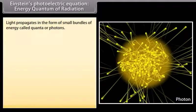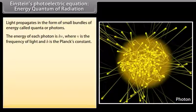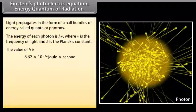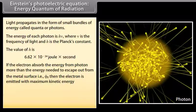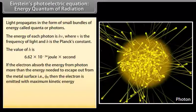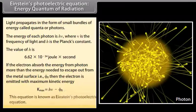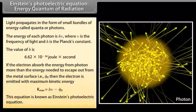Light propagates in the form of small bundles of energy called quanta or photons. The energy of each photon is hν, where ν is the frequency of light and h is Planck's constant (6.62 × 10⁻³⁴ J·s). If an electron absorbs energy from a photon greater than the work function φ₀, it is emitted with maximum kinetic energy K_max = hν − φ₀. This is known as Einstein's photoelectric equation.